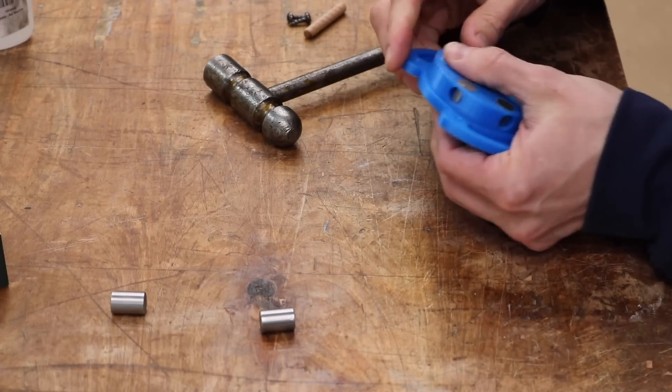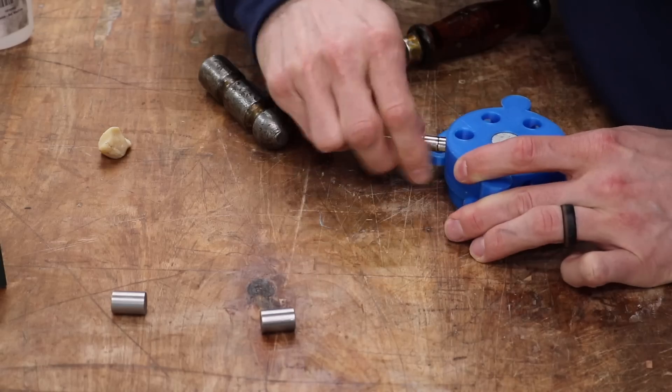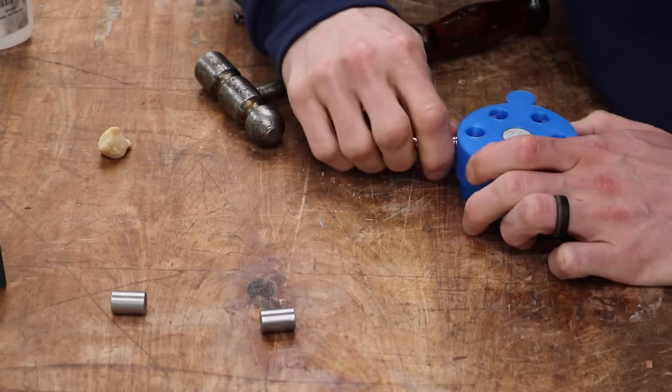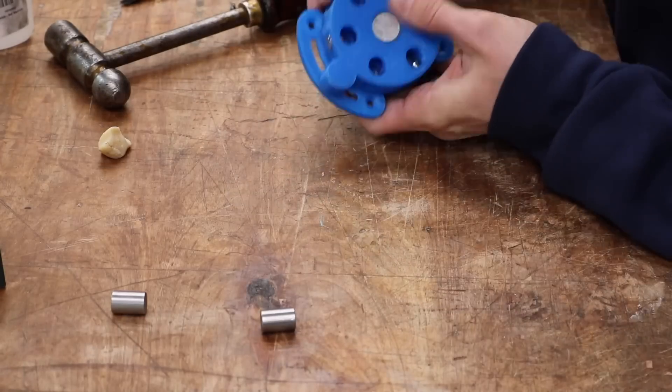Now we just need to finish the top. And it is very similar. The magnets go in the same way where I put every other one in the same direction and then flip and put the last three in so that each one is reversed. Same exact setup.